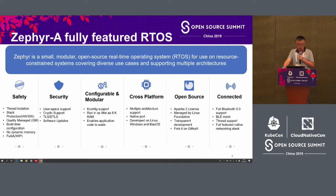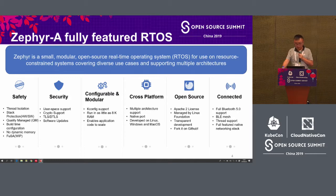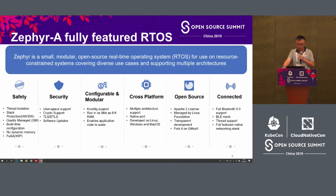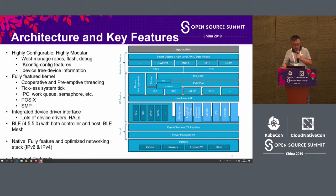Zephyr follows the Apache 2 license and is managed by the Linux Foundation. This is very important because it is a third-party neutral platform — it does not belong to any single company, not ARM, it is a Linux Foundation platform and relatively neutral. On the connectivity side, it supports full Bluetooth 5.0, as well as 802.15.4, and multi-protocol IPv4 and IPv6 functionality.